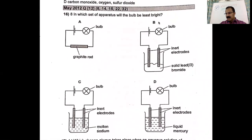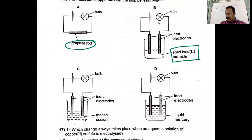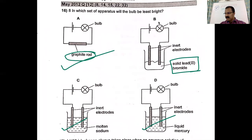In which set of apparatus will the bulb be least bright? The graphite rod is a good conductor — bulb will be bright. Solid lead bromide doesn't conduct at all. Molten sodium conducts — it has positive ions and mobile electrons. Liquid mercury also conducts. So solid lead bromide is the one where the bulb is least bright — it doesn't conduct because ions are not free to move in solid state. The answer is B.